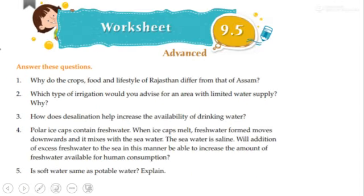Now this is the advanced sheet. The advanced sheet does not mean it is very tough — it basically means you have to go beyond your limits and think. It does not always belong strictly to the chapter content, but it belongs to your chapter along with your own thinking. That is what matters in the advanced sheet.